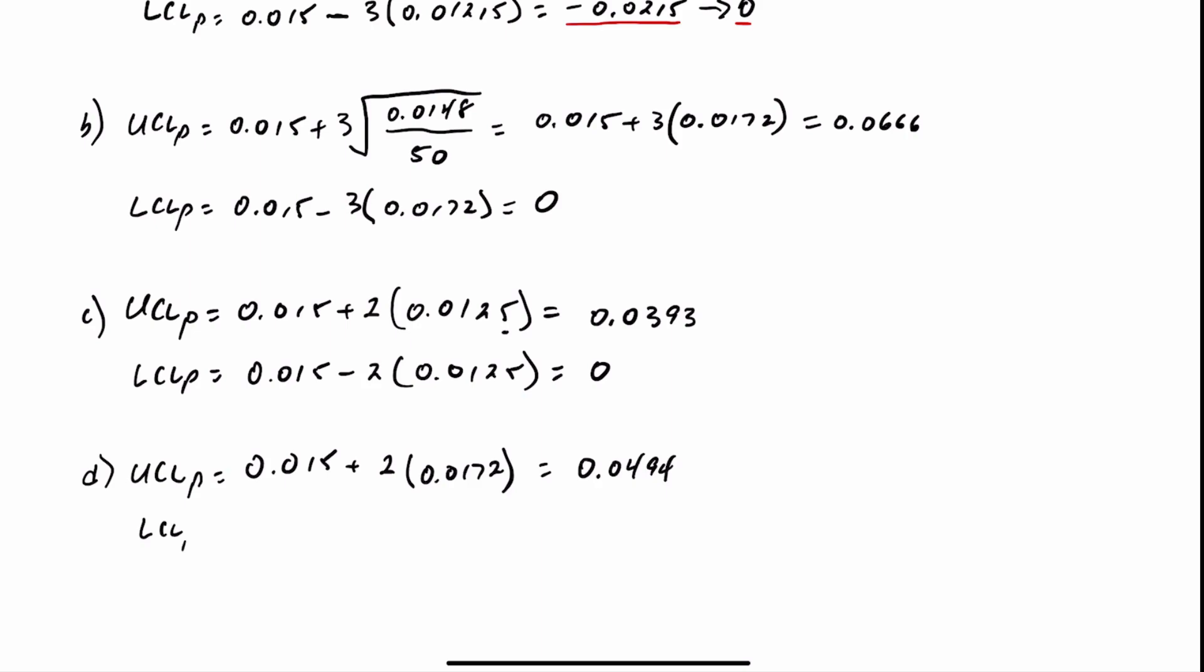And the lower control limit: 0.015 minus 2 times 0.0172. That will also give you a negative value, so 0.